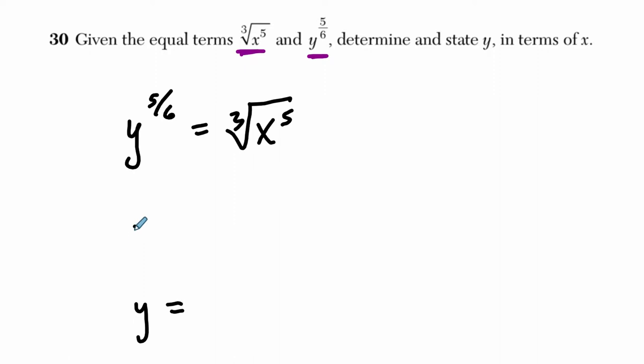How do we do that? The first thing I'm going to do, if you have these radical signs in here, I suggest that you rewrite it using exponents. So x is being raised to the fifth power and the third root is being taken. So it's x to the five thirds.